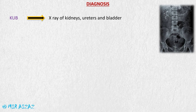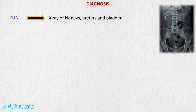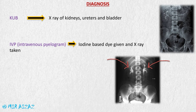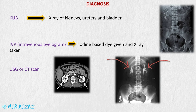For diagnosis, a KUB X-ray may be ordered — K for kidney, U for ureter, B for bladder — giving an X-ray image of kidneys, ureters, and bladder. The second test is an IVP (intravenous pyelogram), which involves administration of an iodine-based dye followed by X-rays. We can also order a USG or CT scan, and urinalysis to measure electrolyte levels, mineral concentrations, and urine pH.